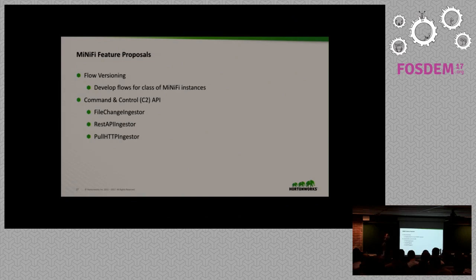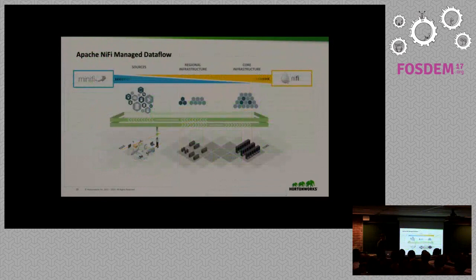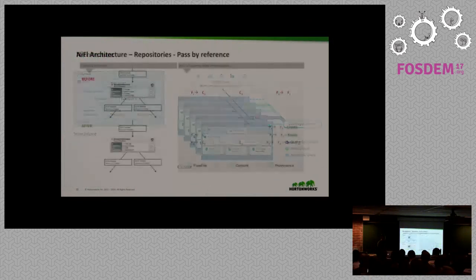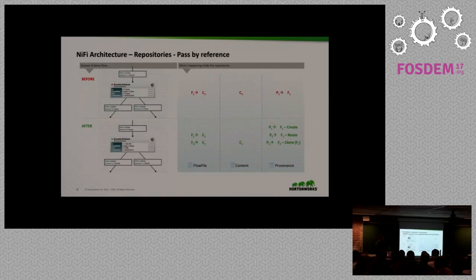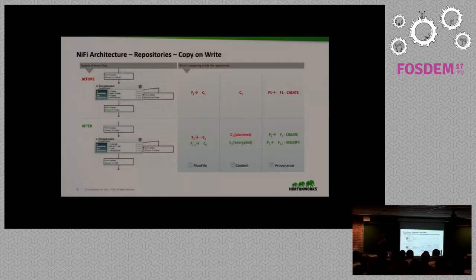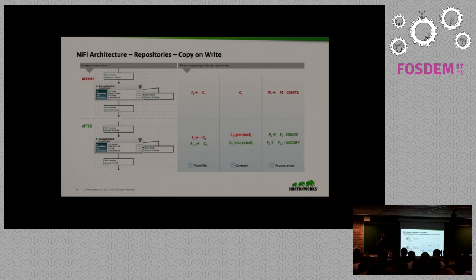The question was about exactly-once delivery. NiFi uses what's called a write-ahead log to track all of the data flowing through the system, and so it will guarantee exactly-once delivery. The data is not manipulated in place — copy-on-write means the data exists permanently as long as you have storage. When it gets sent to a follow-on system, it receives a confirmation — it's a two-phase commit signal. If that wasn't received, NiFi can replay that information to the follow-on system.